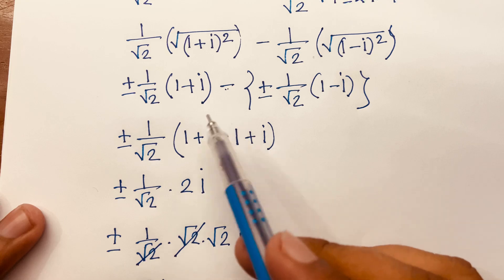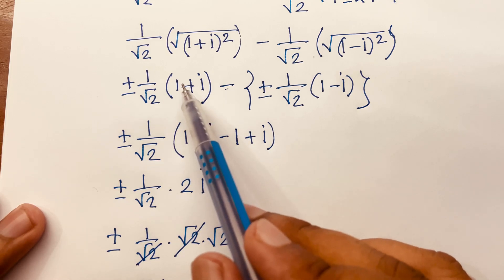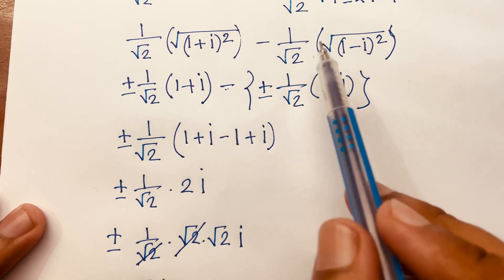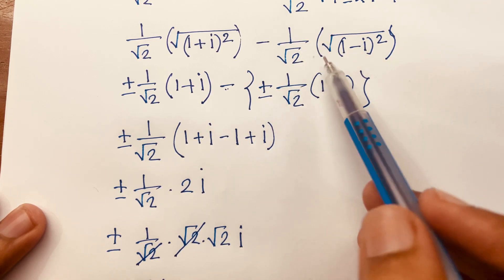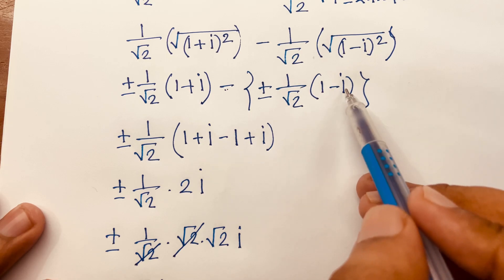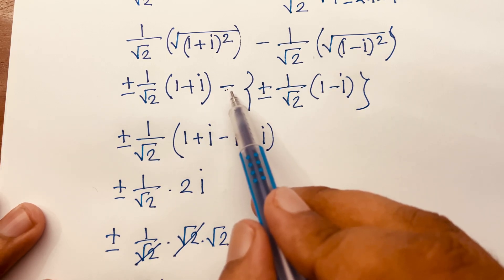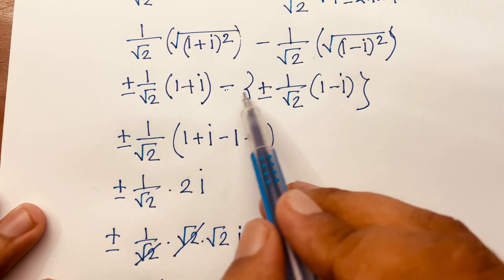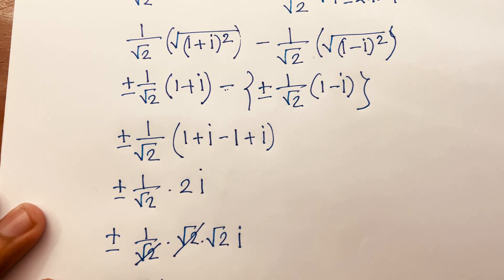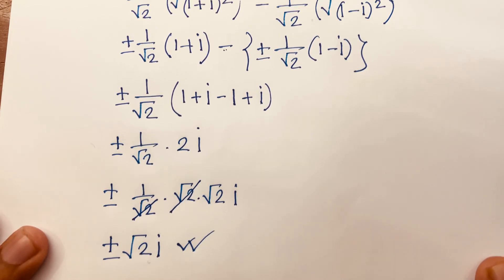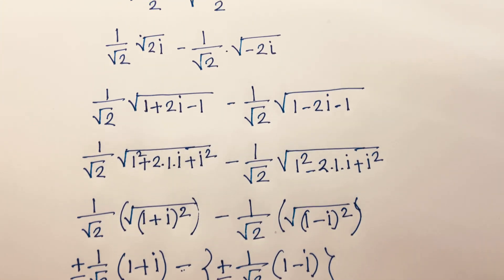Look, here is the value of square root i is plus or minus 1 over square root 2 times 1 plus i, and the value of square root minus i is plus or minus 1 over square root 2 times 1 minus i, and here is minus. So if you take plus or minus, every value gives the same answer. Thank you all. If you enjoyed this video, please subscribe to my channel and like this video. Goodbye.